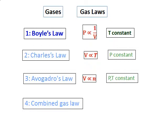Boyle's law states that pressure is inversely proportional to volume at constant temperature. Charles's law deals with the direct proportion of volume with temperature at constant pressure. Avogadro's law relates volume and number of moles when pressure and temperature are constant. We will cover Charles's law, Avogadro's law, and the combined gas law in the next video.